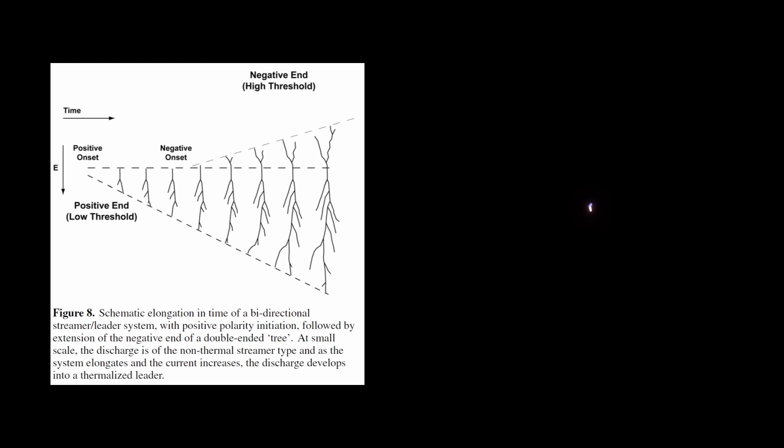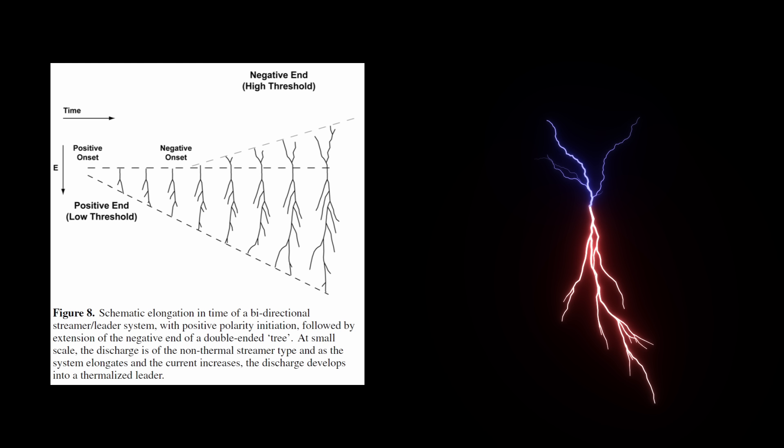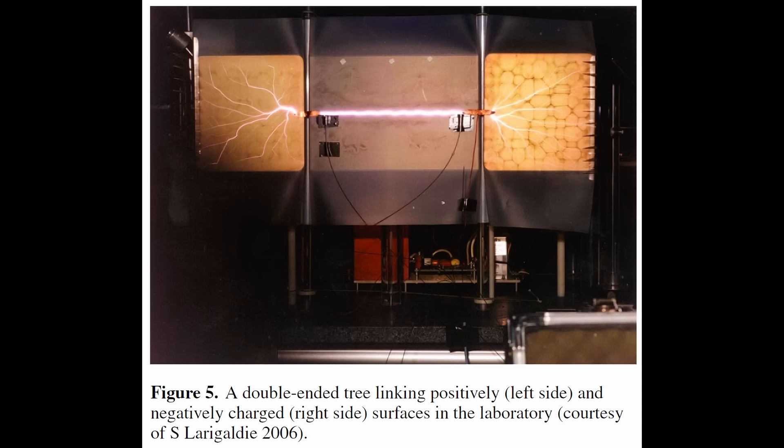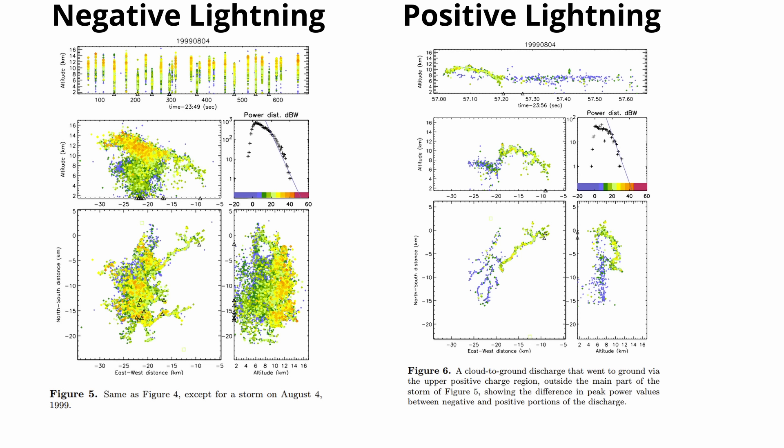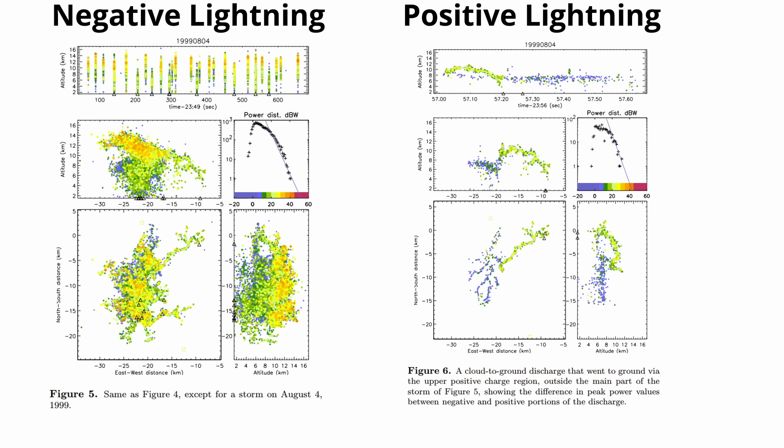The majority of lightning flashes unfold as double-ended trees, bridging spaces charged with opposite polarities. One side ventures into the positive charges while the other explores the realm of the negative charges. Further laboratory experiments unveiled the double-ended structure of discharges, exposing an asymmetry between both ends. Detailed radio frequency images of lightning breakdown process showcased an order of magnitude asymmetry in energy radiation.